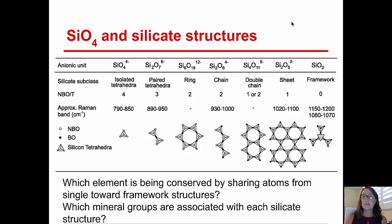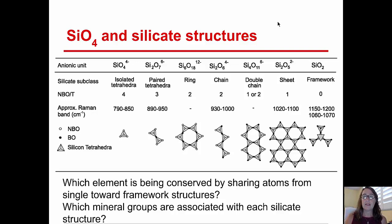Multiple chains can join together to form a double chain, and that's the amphibole group, which contains hornblende, another common mineral in igneous rocks. Multiple chains can also form large sheet structures, and that's what we see in the micas — biotite and muscovite — in igneous rocks. Those are the flaky minerals with just one direction of cleavage that peel off like layers. Finally, sheets can stack atop one another and form framework structures, and that's what we see in the feldspars and in quartz. So those are the different silicate structures that we find in igneous rocks.